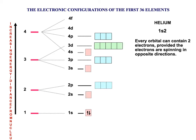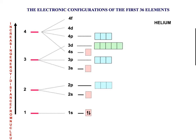Helium has 2 electrons. The next electron goes in the same orbital but pointing downwards to show it has opposite spin. In shorthand this is written as 1S², to show there are 2 electrons in that subshell.